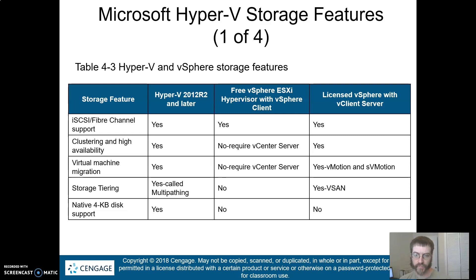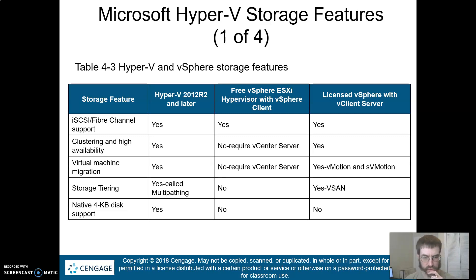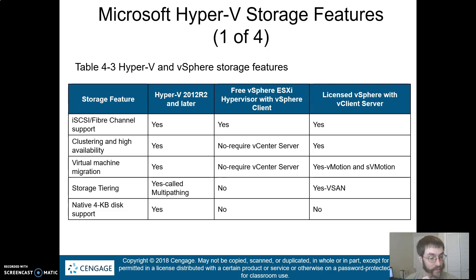Fiber Channel is supported across the board. Hyper-V and the licensed vCenter Server both support clustering and high availability. Both Hyper-V and the licensed version of vSphere support virtual machine migration — vCenter calls these vMotion and Storage vMotion. They both support storage tiering, which Hyper-V calls multi-pathing, while vCenter handles it using vSAN and various storage space types. They also support 4K disk. Note that the free version of ESXi with the vSphere client only supports Fiber Channel.